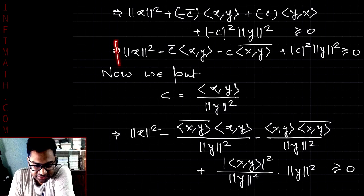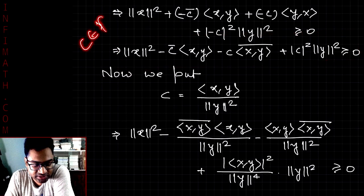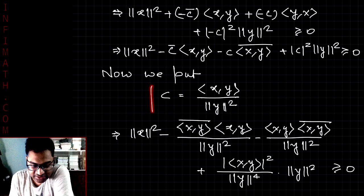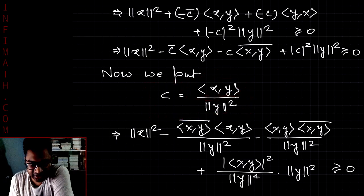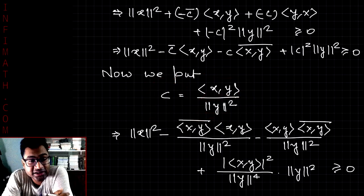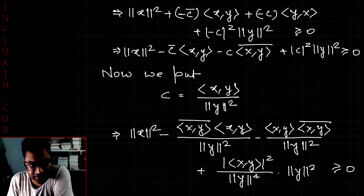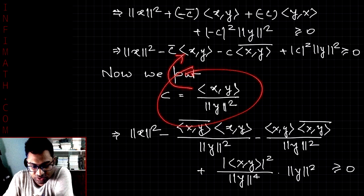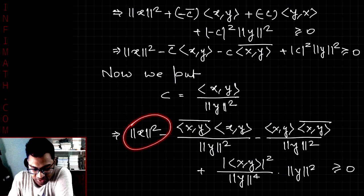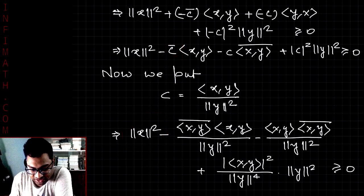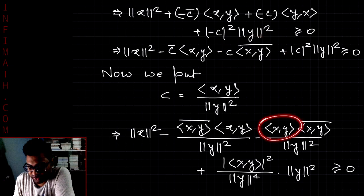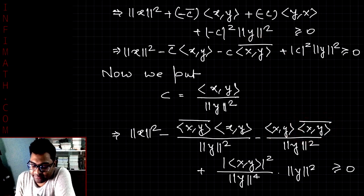This inequality holds for any scalar c, so we choose a particular value: c = ⟨x, y⟩ / norm of y squared. This is valid since y is non-zero. Substituting, we compute c̄ = ⟨x, y⟩ conjugate / norm of y squared. Then c̄·⟨x, y⟩ becomes |⟨x, y⟩|² / norm of y squared, and similarly for the conjugate term. The last term involves |c|² times norm of y squared, which gives |⟨x, y⟩|² / norm of y squared.